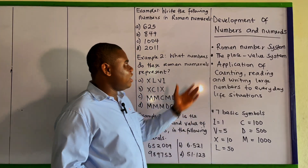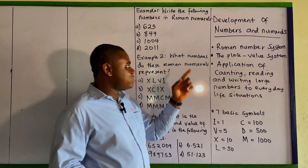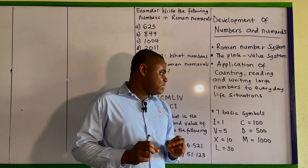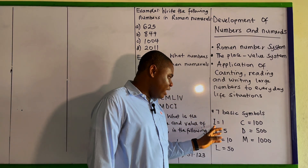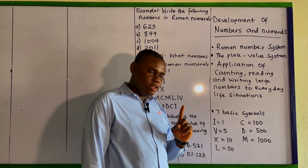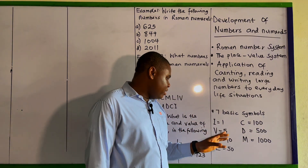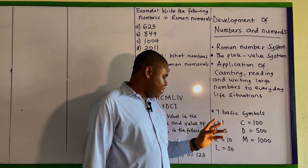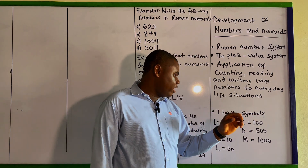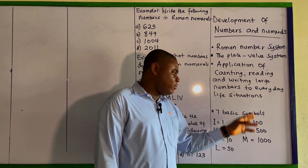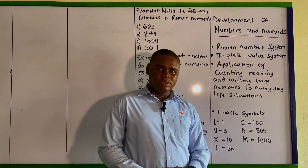For the first part we have the Roman number system. In the Roman number system there are seven basic symbols to understand. The first one is I which is for one, next is V which is for five, then X which is for 10, L for 50, C for 100, D for 500, and M for 1000.